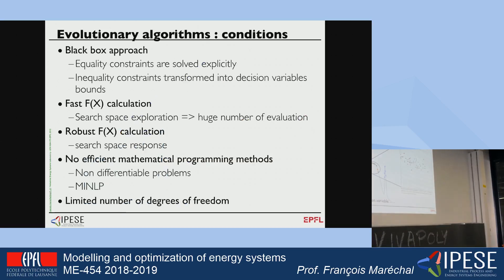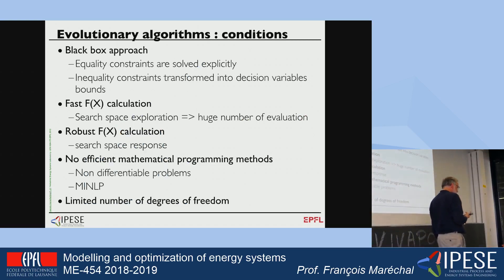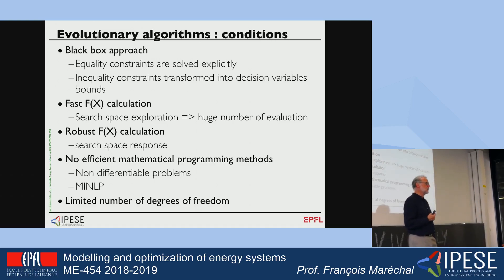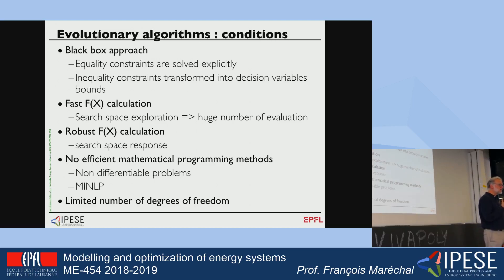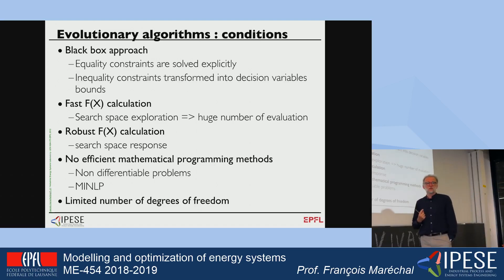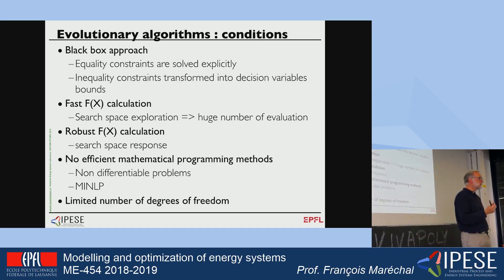To apply the evolutionary algorithm, we need a model that solves the equality constraints, because we cannot ask the evolutionary algorithm to solve the equations itself — the algorithm is not built for this. A trick for handling equations is to say that one characteristic of the fitness of an individual is the sum of the squared residuals of the equations, which needs to be minimized to zero.